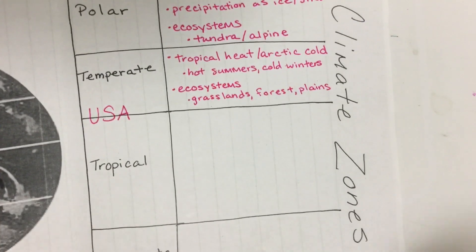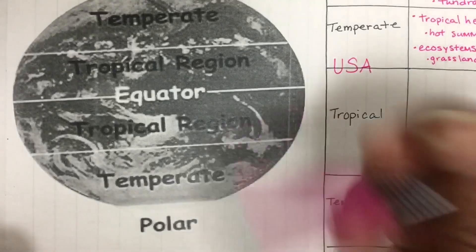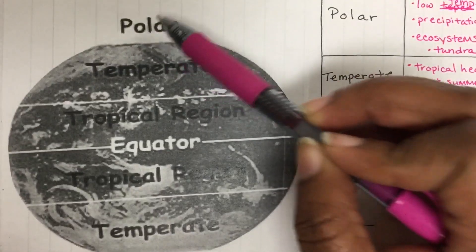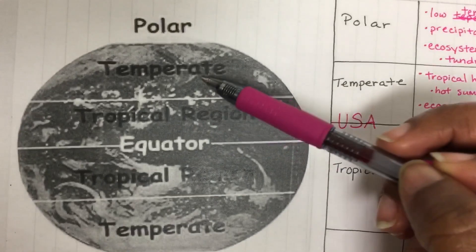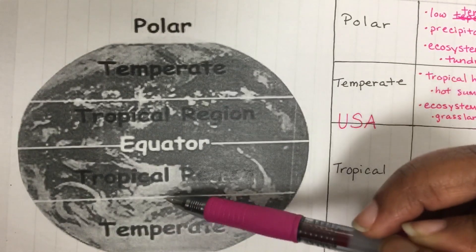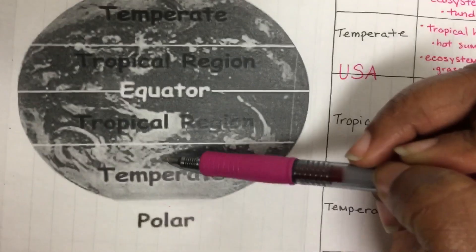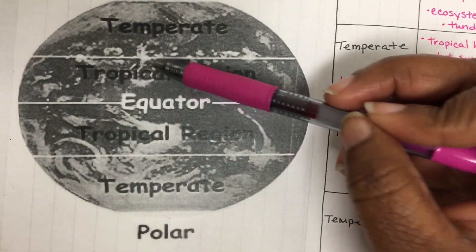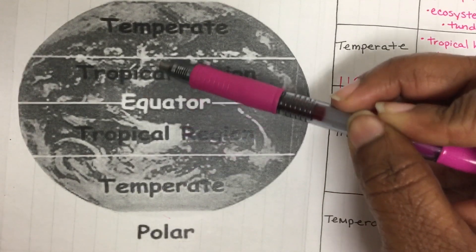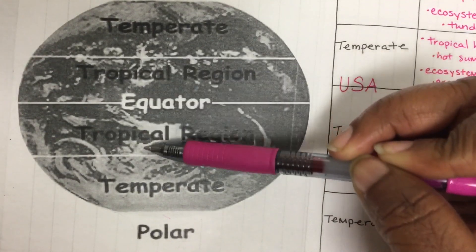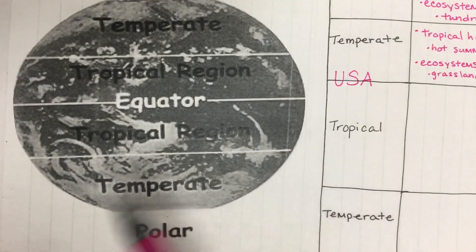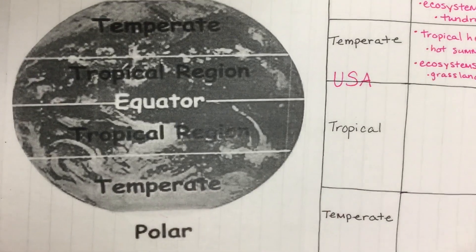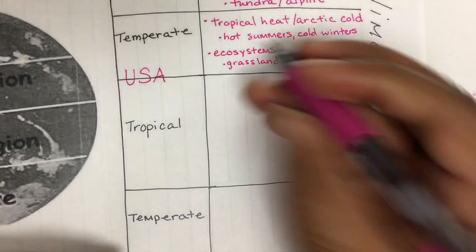In the tropical zone, it's our biggest section. Polar is at the very top and at the very bottom. Temperate is right underneath polar, or right on top of polar, depending on which side of the earth you're on. And then tropical falls into this whole middle part, and it's split by the equator. Tropical is close to the equator.